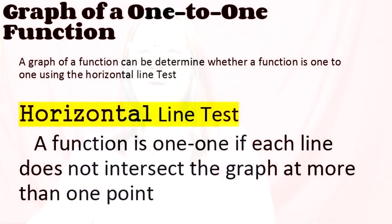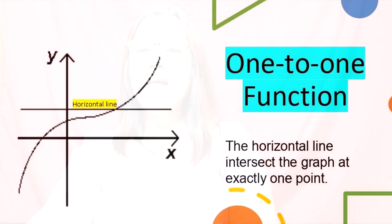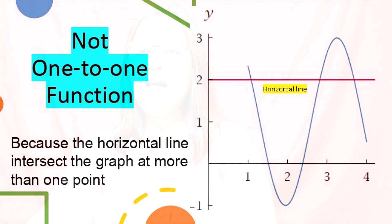How to determine if a graph is a one-to-one function? A graph of a function can be determined to be one-to-one using the horizontal line test. A function is one-to-one if each horizontal line does not intersect the graph at more than one point. For example, if the horizontal line intersects the graph at one point, therefore it is a one-to-one function. For the second graph, the horizontal line intersects the graph at three points, so therefore it is not a one-to-one function because the horizontal line intersects at more than one point.